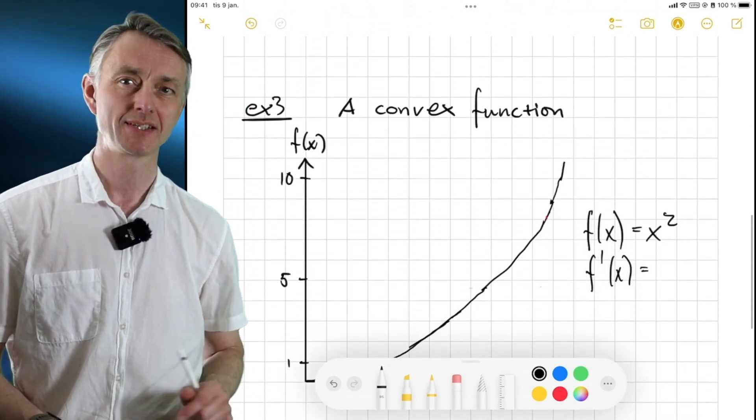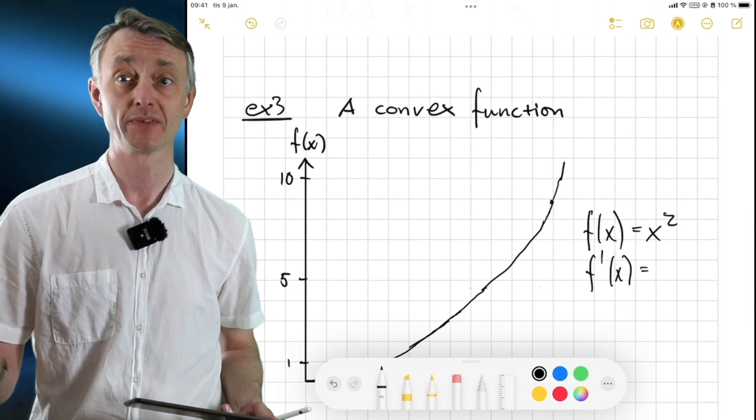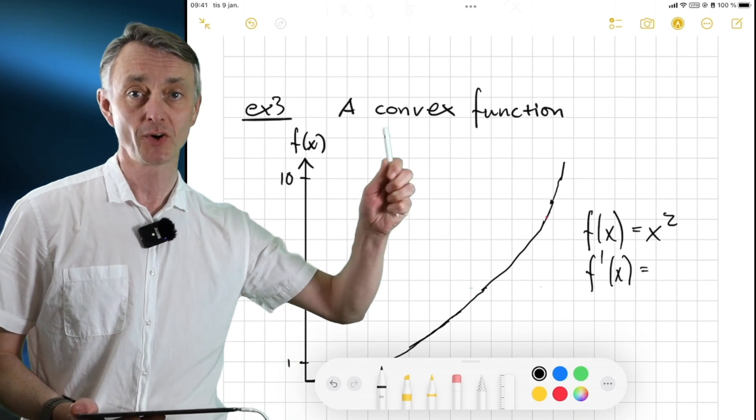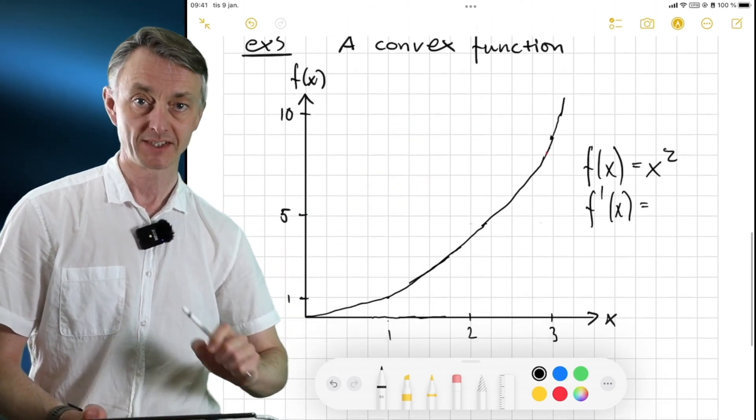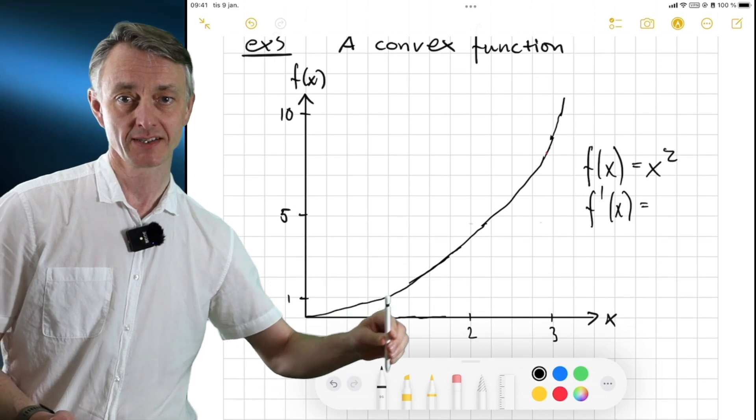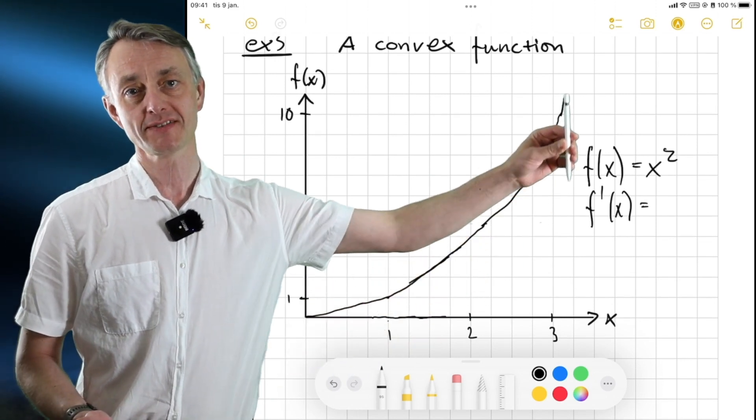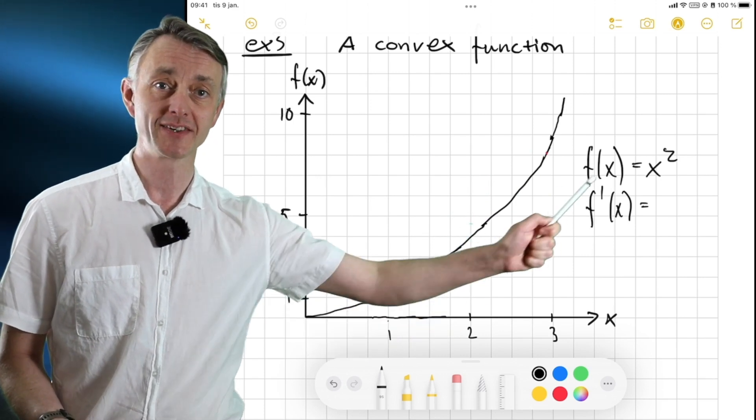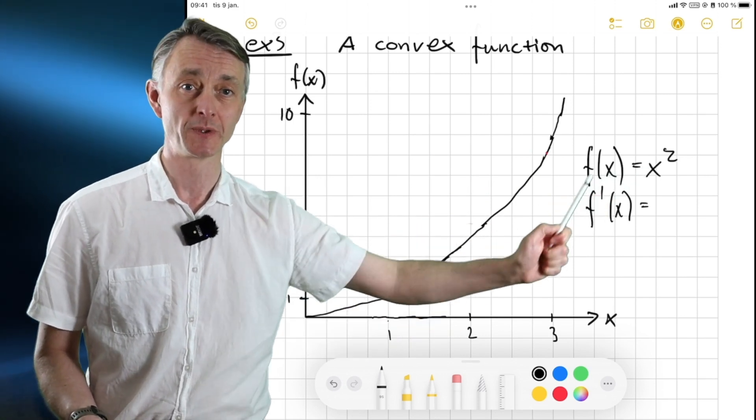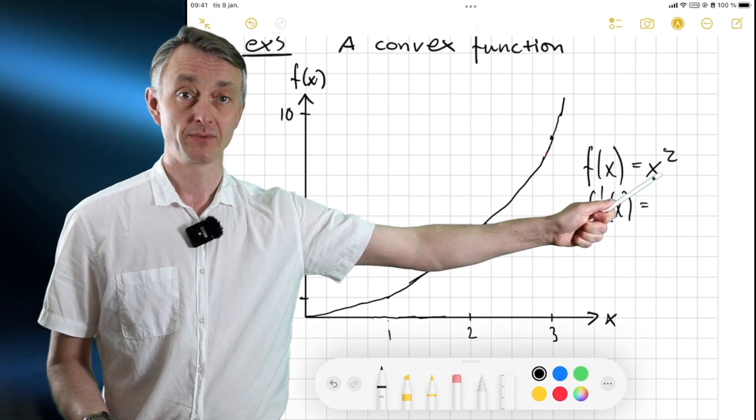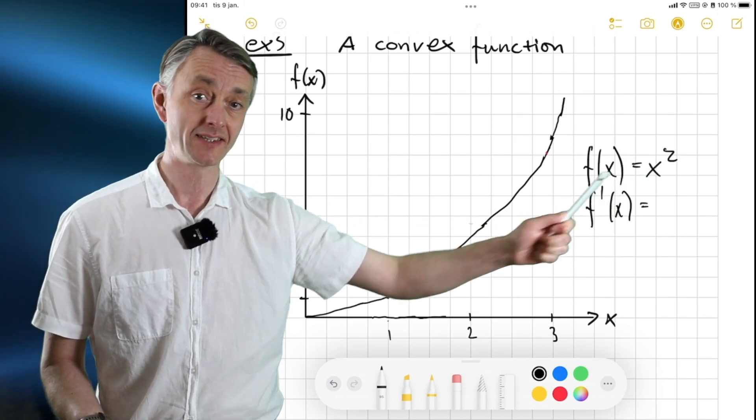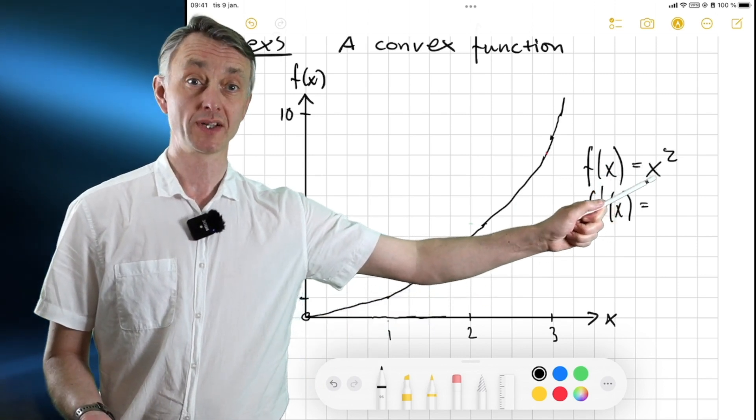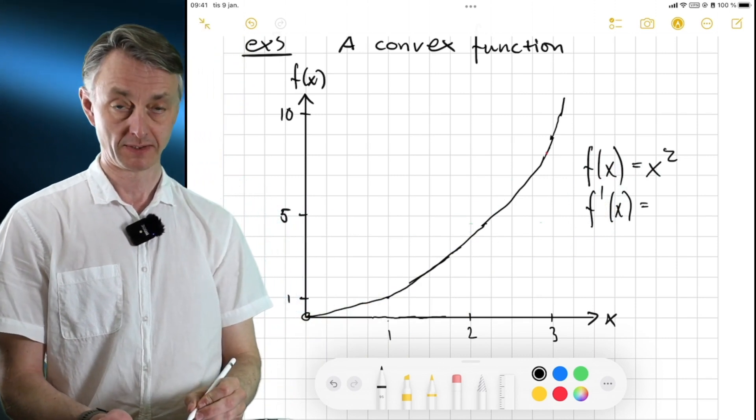Moving on to another example of a function, and this is a convex function. Excuse my poor drawing skills, but you can see that the slope keeps on increasing all the time. And this function I've drawn here is x to the power of 2. So, the function's value, when x is 0, is 0. And when it's 1, it's going to be 1 times 1. So then we are here, right? 1.